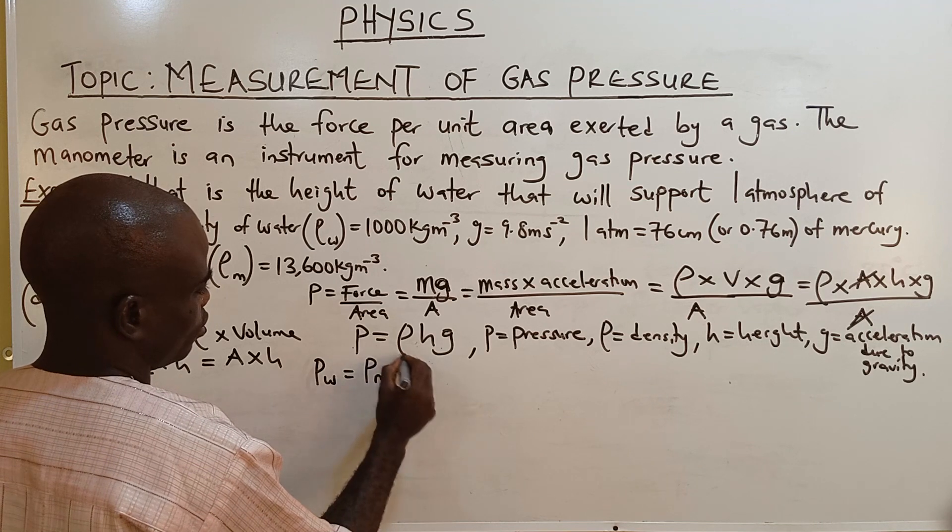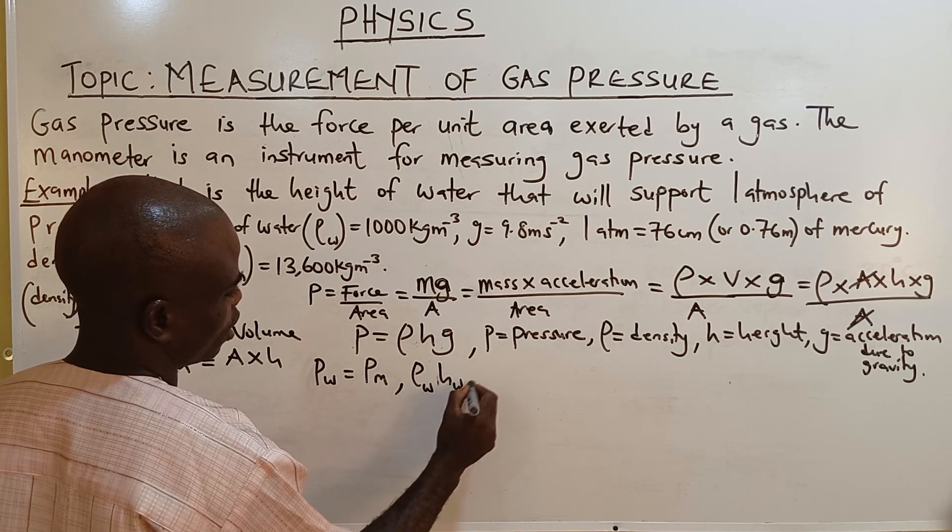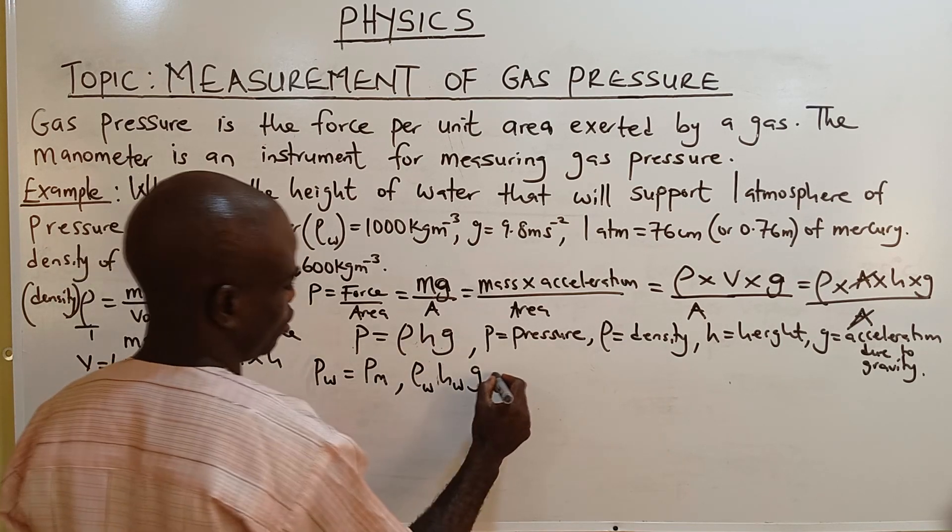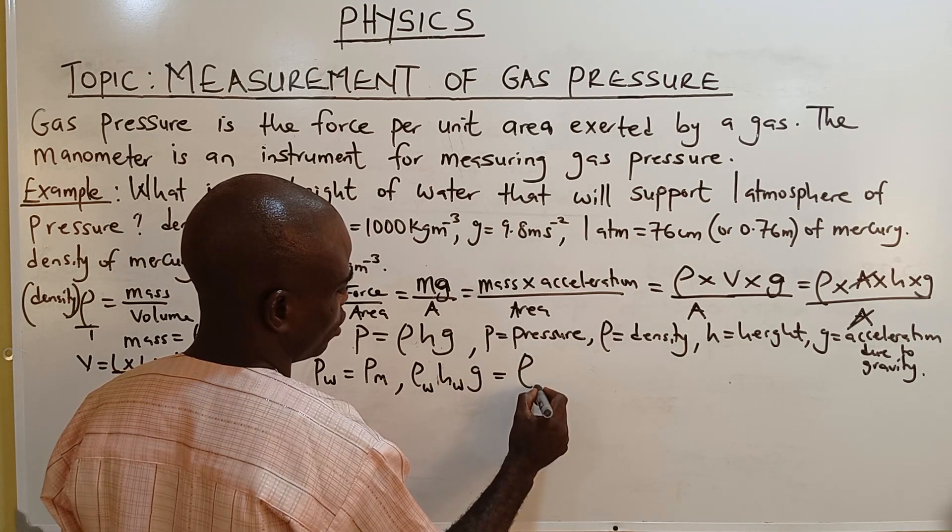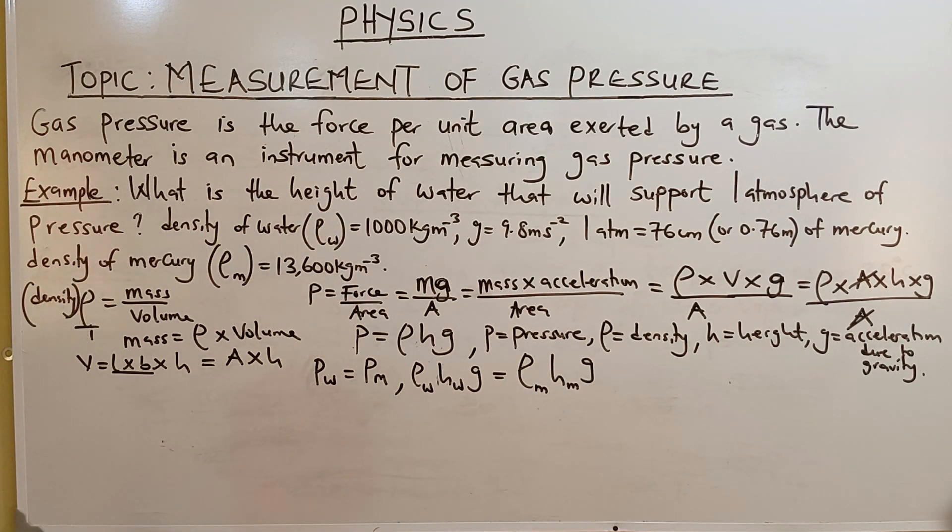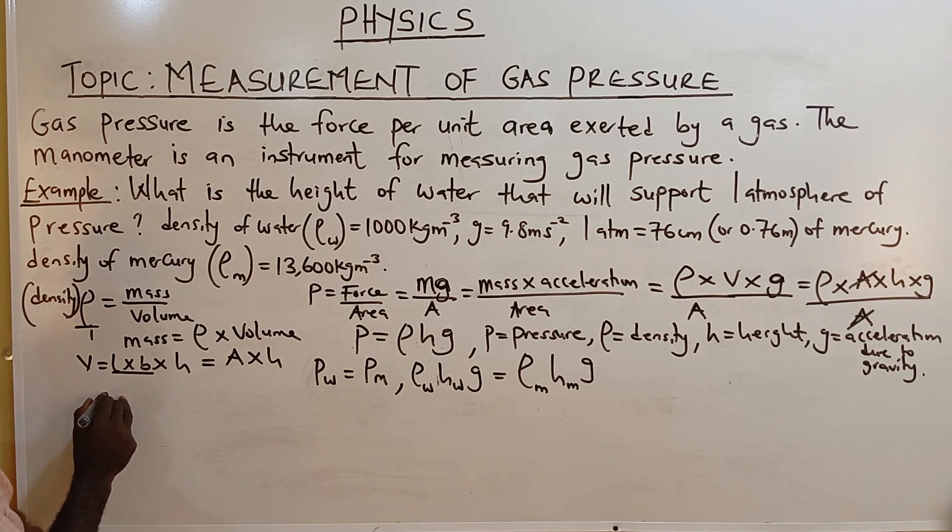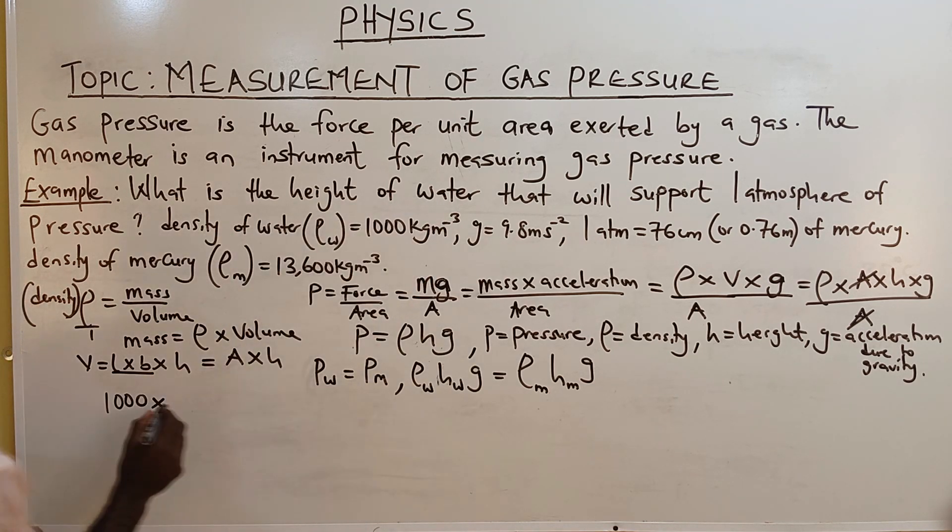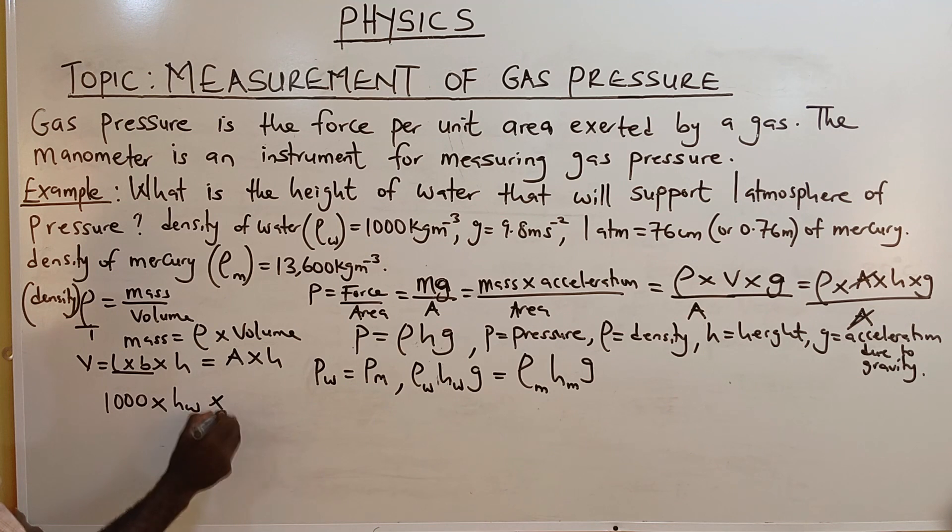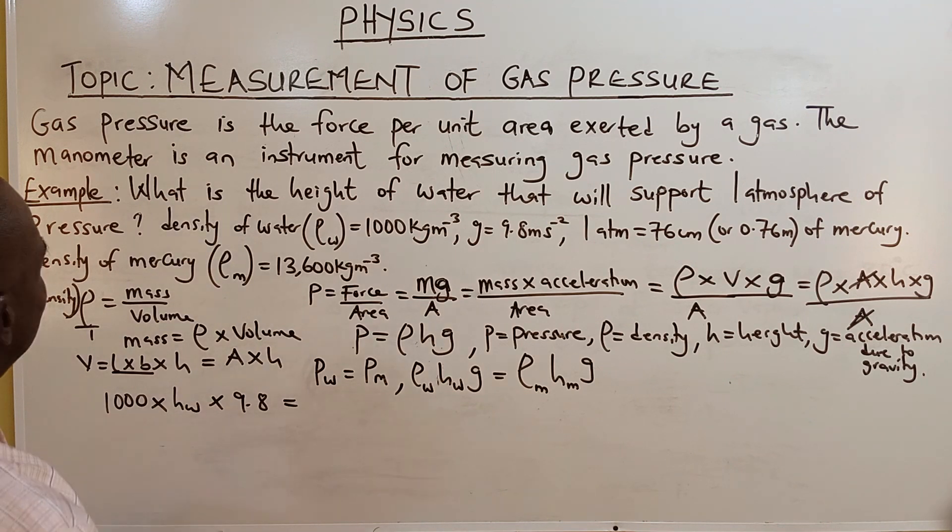You can have density of the water, height, gravity is common, equal to density of the mercury, height of the mercury, and gravity. What's density of the water in this case? Density of water is 1000 kg/m³. 1000 times what is height of the water? That's what we are looking for. Height of the water times 9.8.